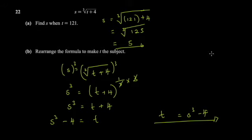The key step here is knowing that to remove a cube root you cube both sides. The notation 'to the power 1/n' for the nth root is very useful — it makes the cancellation clear.